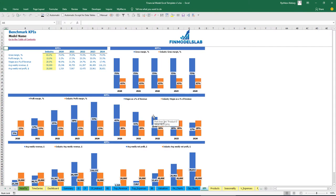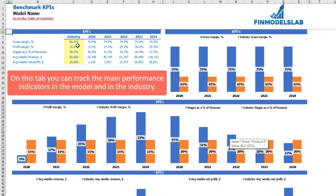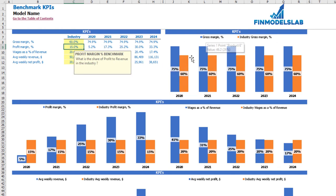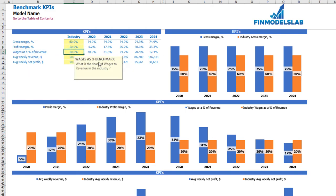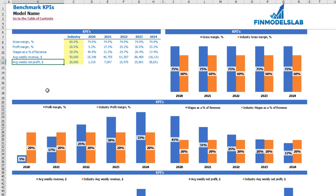On the benchmarks KPIs tab you can find your main industry-specific KPIs, which are adjustable for your industry and country. For example, if the gross margin industry benchmark is 60%, you can see this on the chart — the orange line is the industry benchmark and blue is the gross margin calculated from the model. Similarly for profit margin: if the benchmark is 20%, you can see that for the first two years your profit margin is below the industry benchmark, and from 2022 onward it exceeds it. You also have wages as a percentage of revenue, average weekly revenue, and average weekly net profit benchmarks.